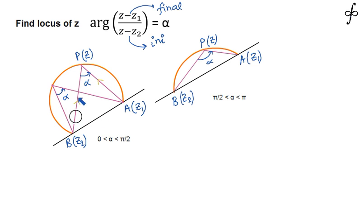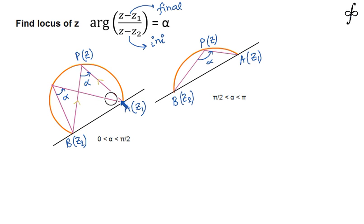As point P moves on a certain path, the angle BPA is every time going to be equal to alpha. If I take point P here, the angle BPA should be equal to alpha. If I take point P at another position, BPA will again be alpha — so every time the angle is constant and equal to alpha.